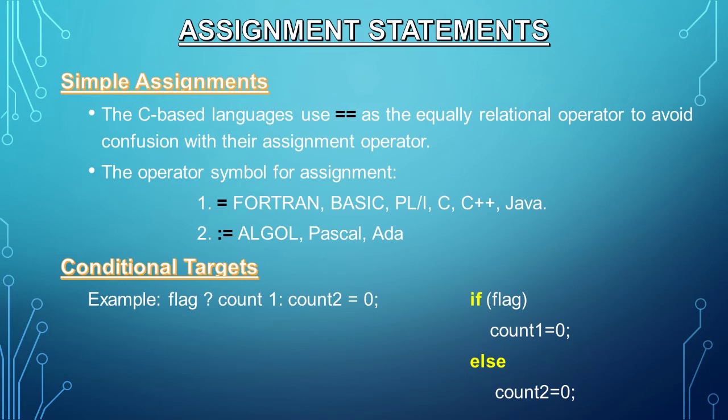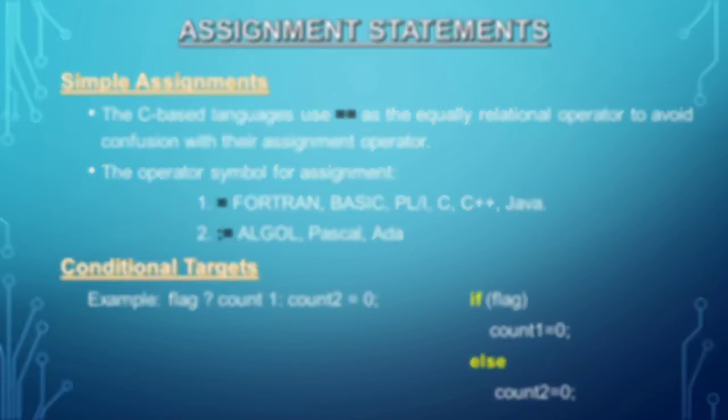Now we will tackle assignment statements. C-based languages use the double equal sign as the equality relational operator to avoid confusion with the assignment operator. In Fortran, Basic, PL1, C++, and Java, they use the equal sign; while in Algol, Pascal, and Ada, they use the := (is set equals to). In the example, the left-side statements are logically equivalent to the right-side expressions or statements.